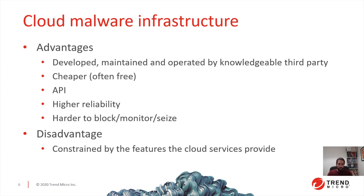The other approach, which is the one that interests us more today, is the cloud malware infrastructure approach. The advantages are that it's developed and maintained by a third party that knows this domain because it's their work. It's cheaper, sometimes even free, and those services usually provide an API which is convenient to use. It's very reliable because it's operated by people that need reliability. And it's harder to block, monitor, or seize because it has many legitimate uses — in fact, most usage of these cloud services is legitimate. The disadvantage is that you are constrained by the features that the API will allow you to do.